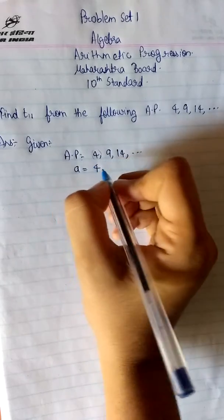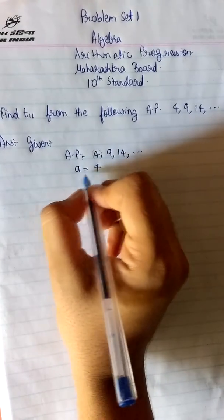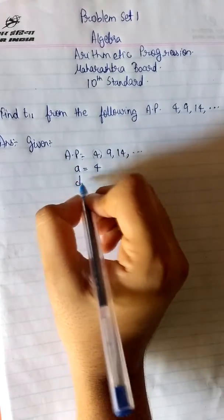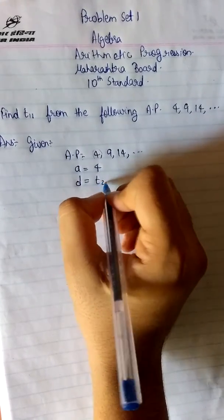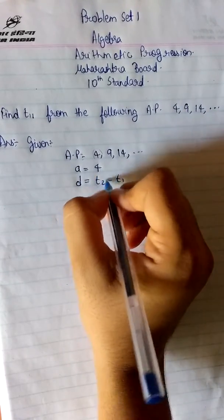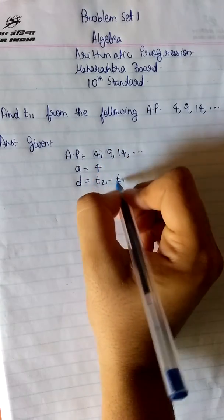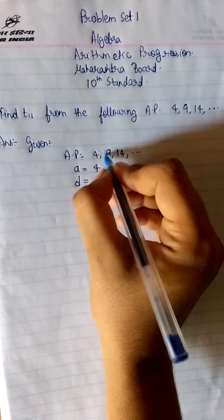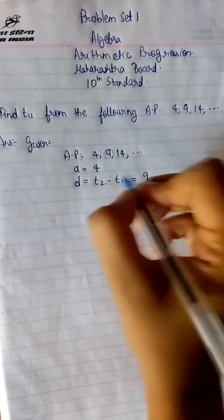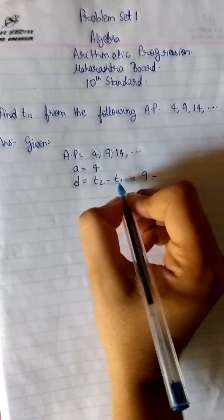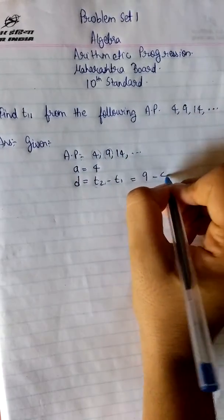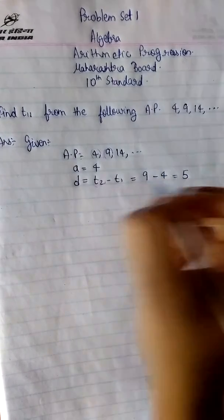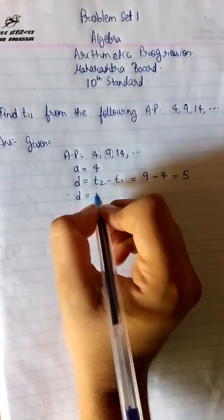So we write 4 here and from the AP we know the common difference. Now common difference D is given as T2 minus T1. Where T2 is the second term and T1 is the first term. Now the second term here is 9. So we write 9 here and minus the first term which is 4. So 9 minus 4 is 5. Therefore we get the value of D as 5.